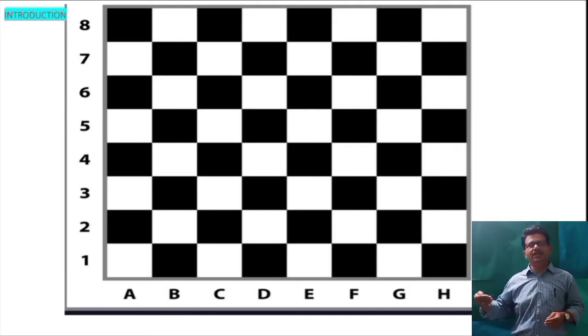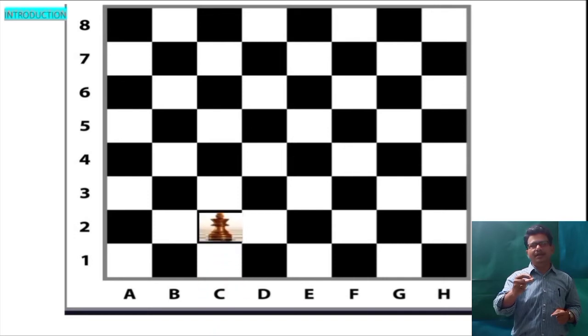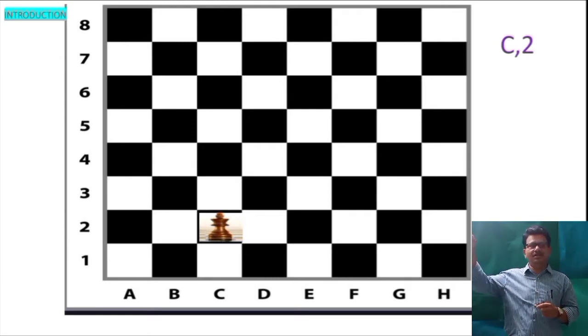Horizontal A, B, C, D, E, F, G, H. Vertical 1, 2, 3, 4, 5, 6, 7, 8 numbers. Here I am taking a king and moving and placed here. What happens? Can you anybody tell the location of this king? We can say the location of this king is C2.